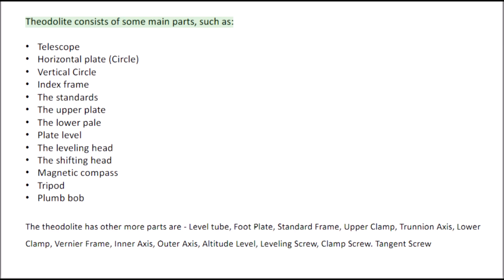Theodolite consists of some main parts, such as: Telescope, Horizontal Plate Circle, Vertical Circle, Index Frame, The Standards, The Upper Plate, The Lower Plate, Plate Level, The Leveling Head, The Shifting Head, Magnetic Compass, Tripod, and Plumb Bob.